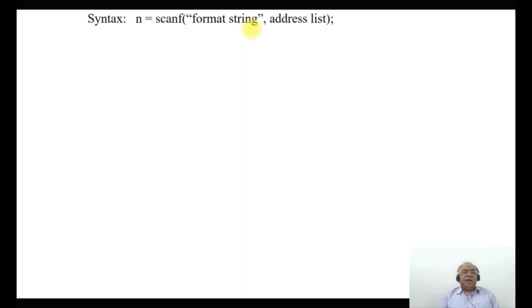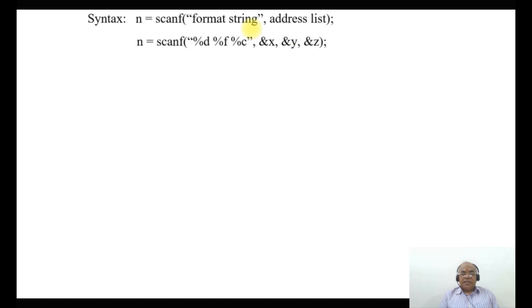The syntax is: n equals scanf, followed by the format string and the address list. For example: n = scanf("%d %f %c", x, y, z) — where all the format specifiers are within double quotes and x, y, and z are the variable addresses.